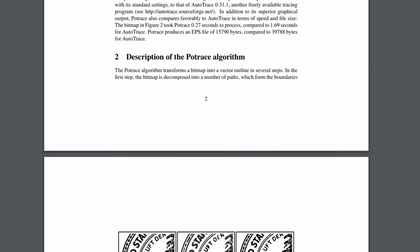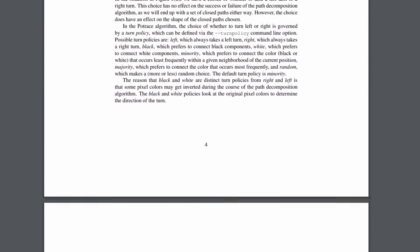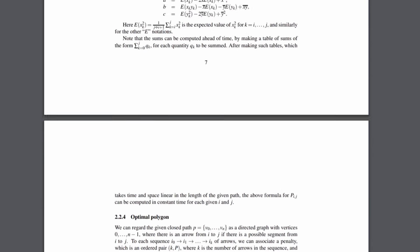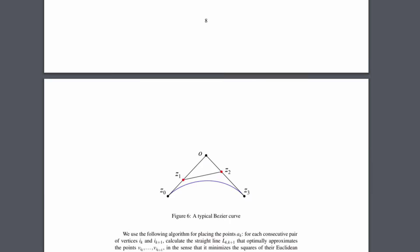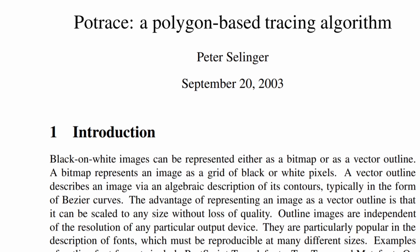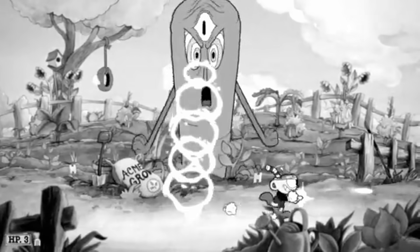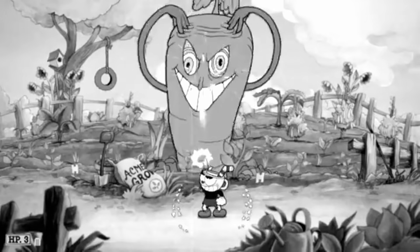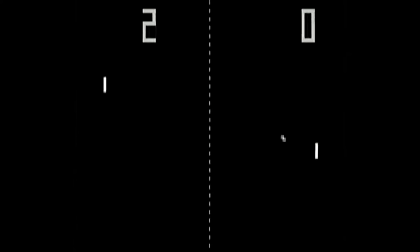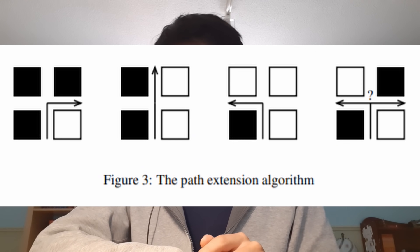However, another issue arises. Because of the edge detection algorithm used by PoTrace, the image that is inputted must be strictly one of two colors, such as black and white. Note that this is not grayscale — this is strictly black or white pixels. This is because PoTrace traces the edges between two colors and two colors only.